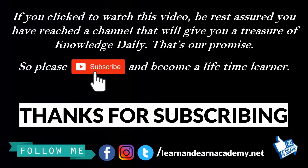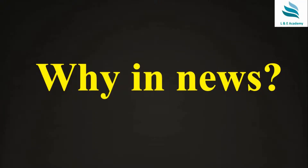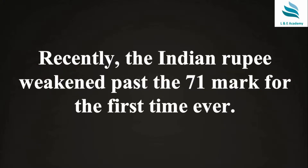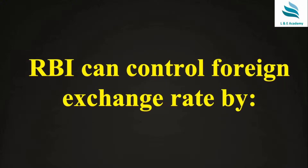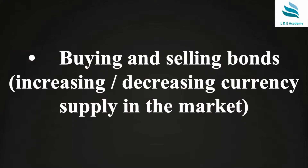Let us see why exactly this is in the news. Recently the Indian rupee weakened past the 71 mark for the first time ever. How can RBI control foreign exchange rates, and why is it that the Indian rupee is falling continuously? 71 is the maximum fall which the rupee has recorded.